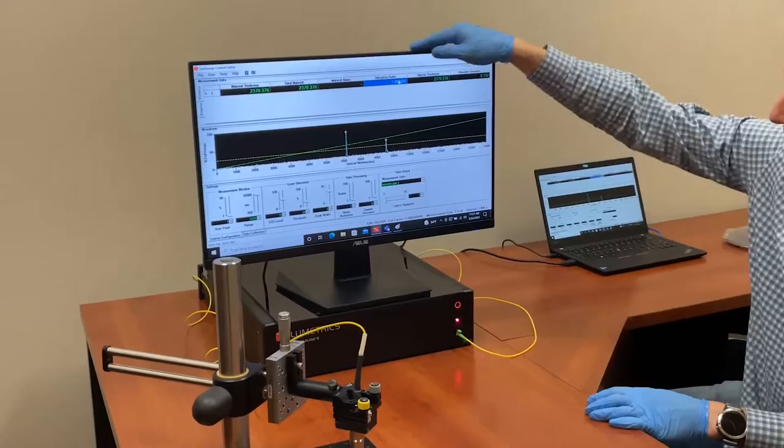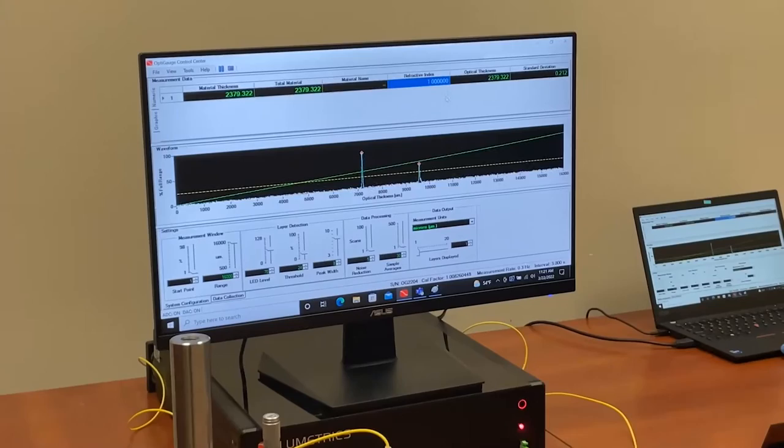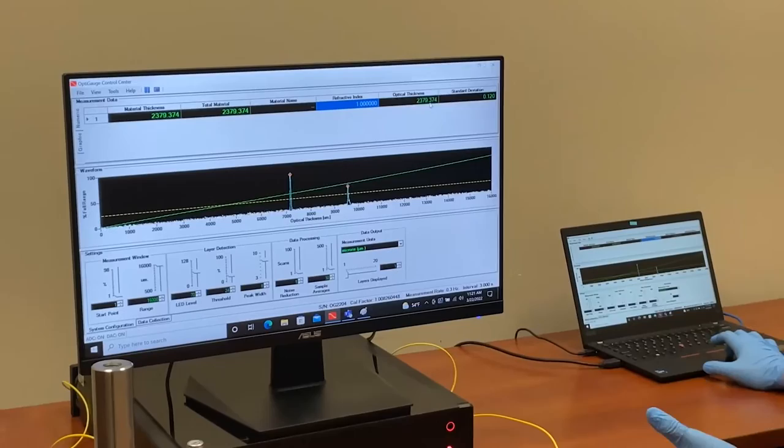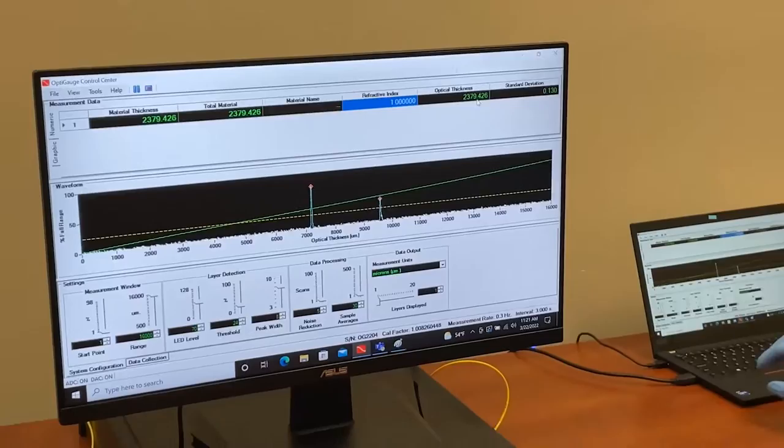But what we're seeing here is that the default setting in the system has a refractive index of one which is for air not silicon. So the optical thickness or the total path length through the sample is a little nonsensical. And so the way you would adjust this is you go in and you tell it what the refractive index is.